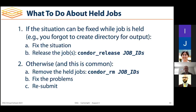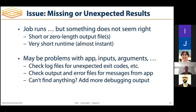When everything runs and you look at results but something isn't right — very short or zero-length output files, jobs that ran almost instantly when they shouldn't have — these suggest something went wrong with your software, inputs, or arguments. We're trying to run software on somebody else's computer unattended, and it's hard. We all make mistakes. Look at your error files and logs carefully to figure out what happened.